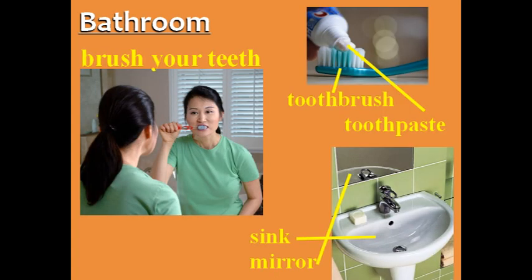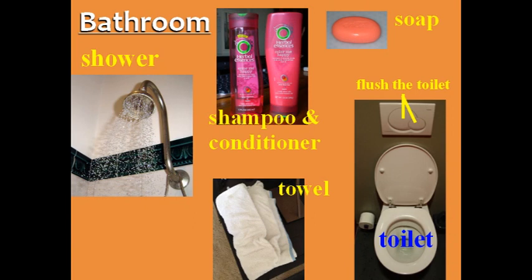Bathroom. Now we'll learn about the bathroom. In the bathroom, you can brush your teeth using a toothbrush and toothpaste. Most people use the sink to brush their teeth, and in this photo, the woman is looking in the mirror. In the bathroom, you can also take a shower. You use shampoo and conditioner to wash your hair, and soap to wash your body. Then you use a towel to dry off.